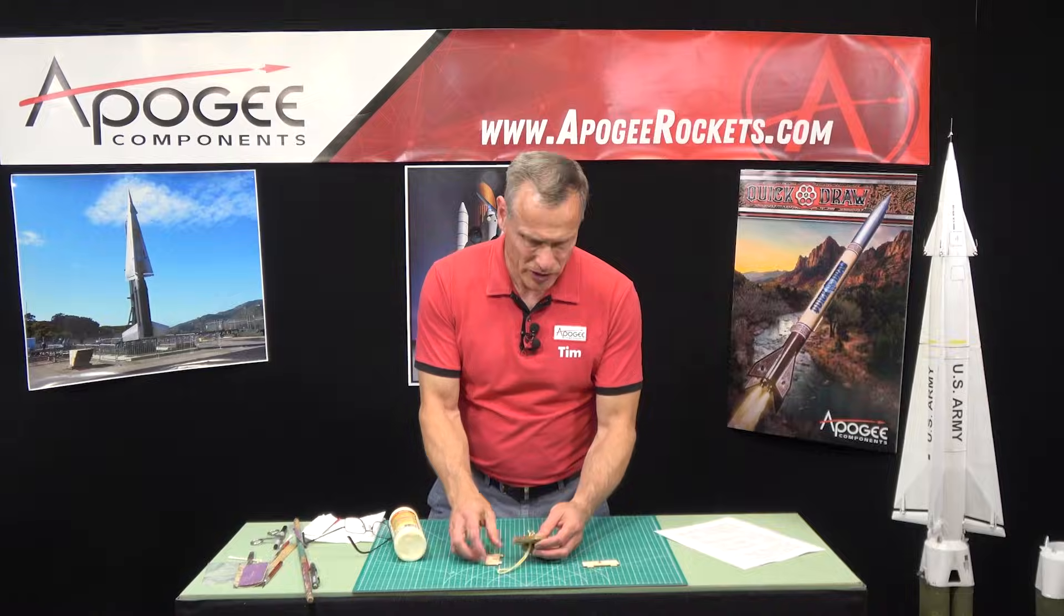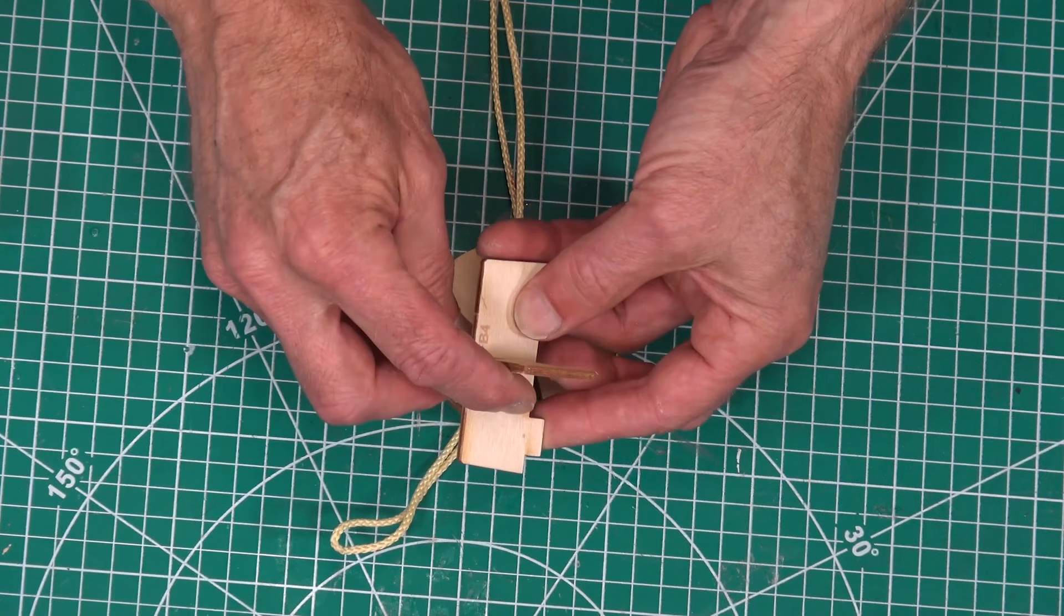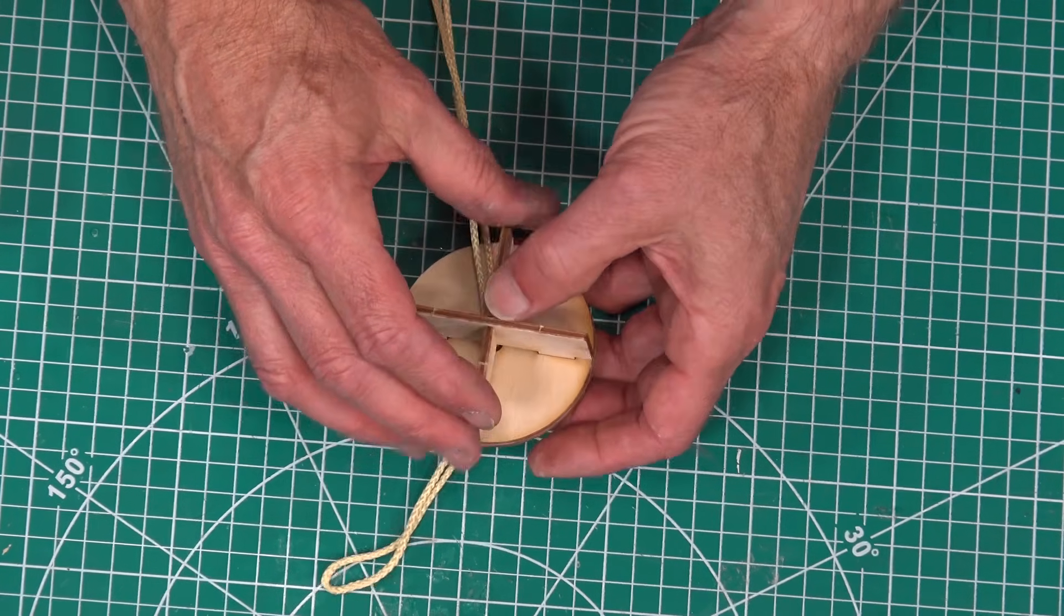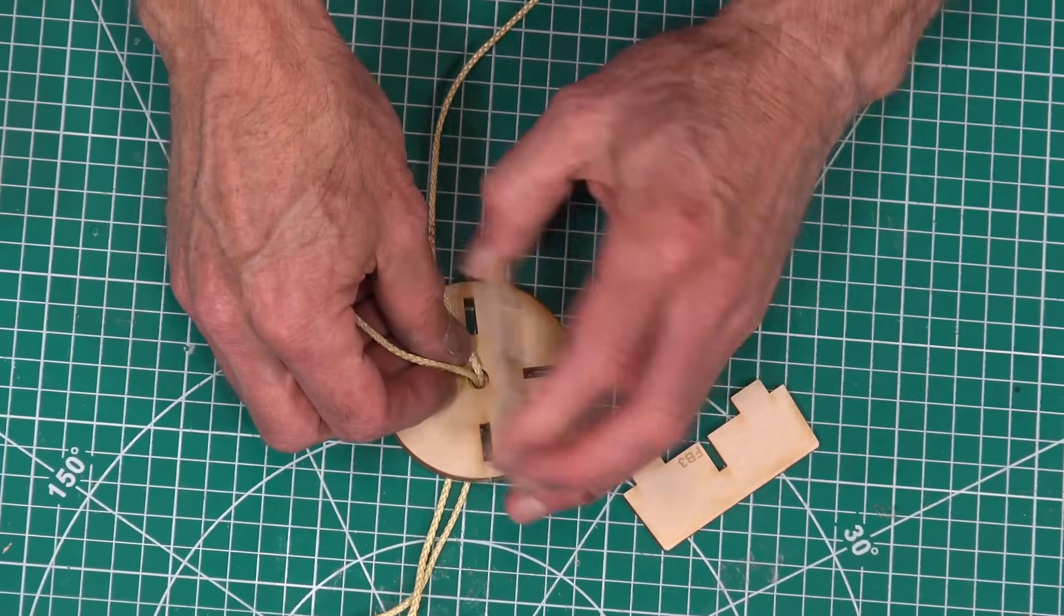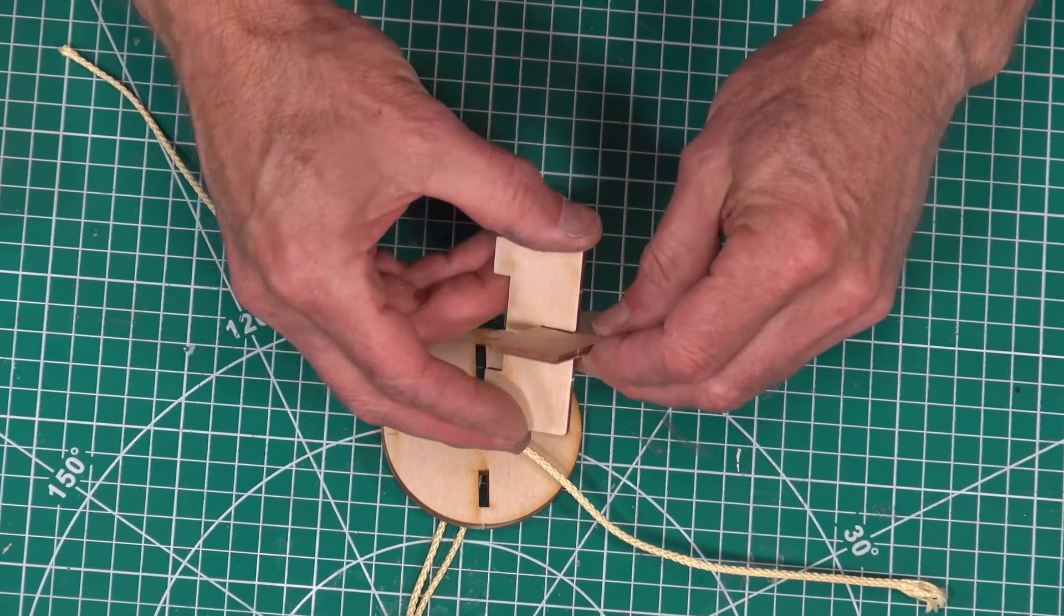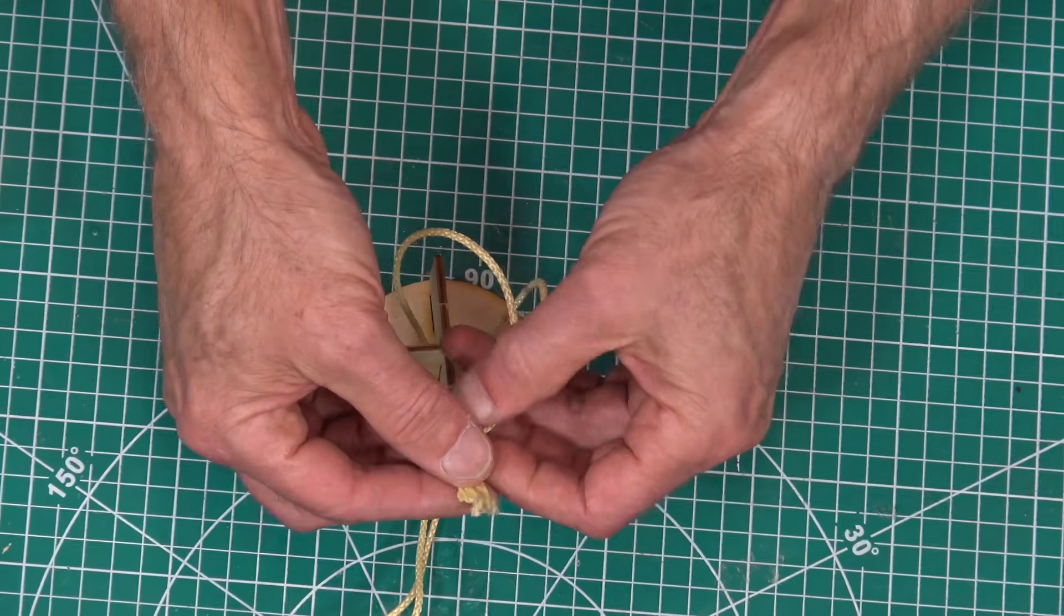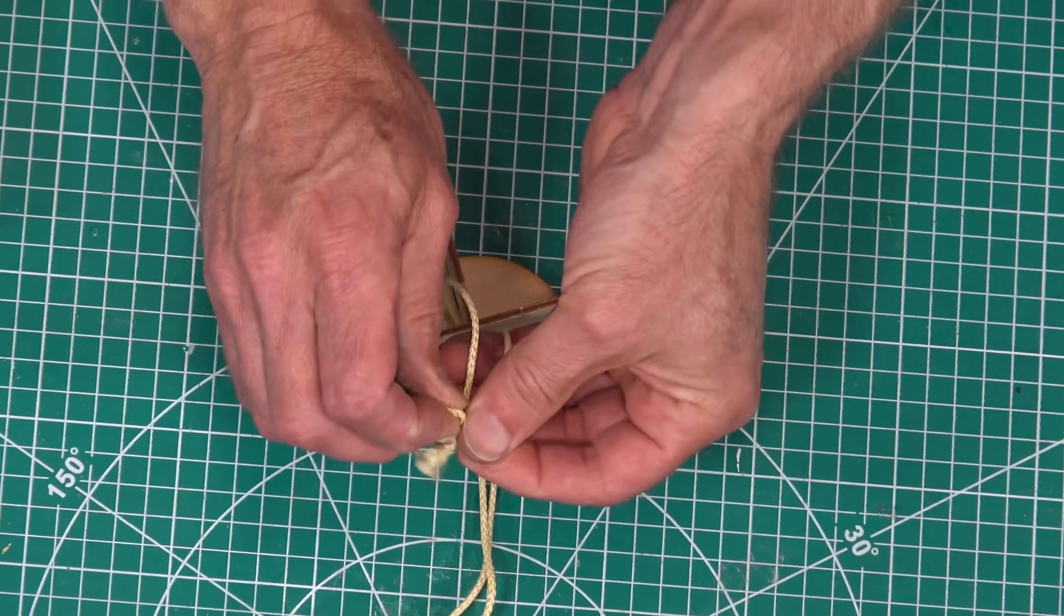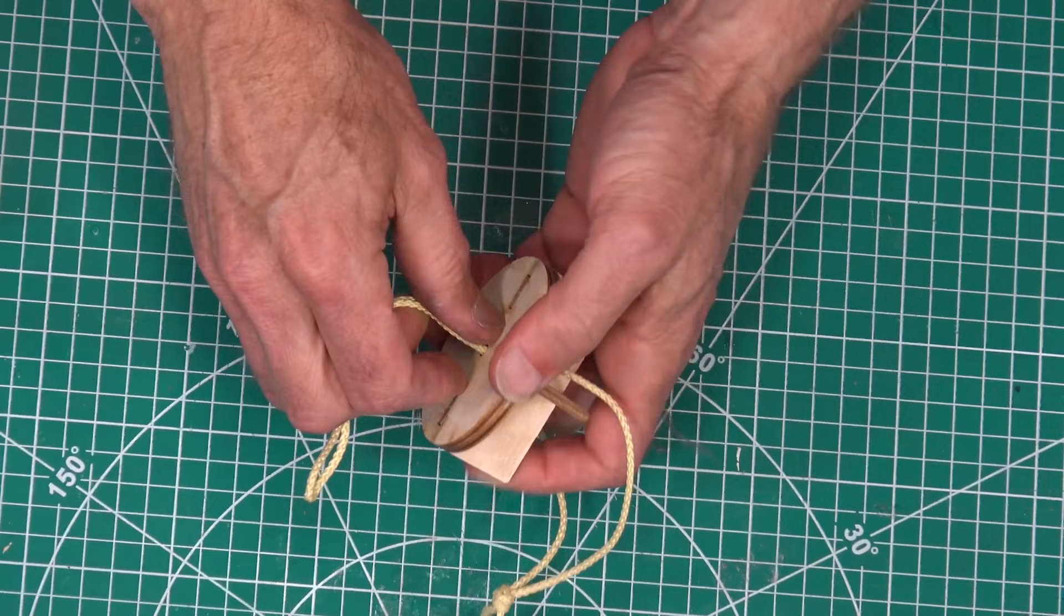Step 102 is to dry fit these two together like this. It's going to go over the top of the shock cord. Bring one shock cord this way, one that way, just like that. Then we're going to tie the shock cord in a knot. Take these two ends and tie it into a knot like that. Pull good and tight.